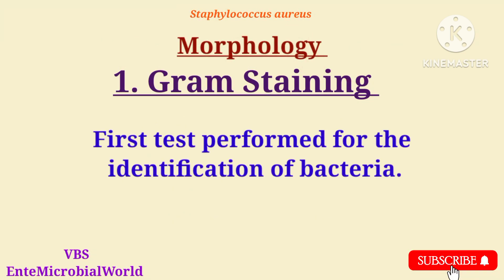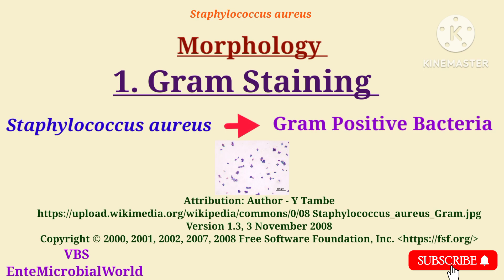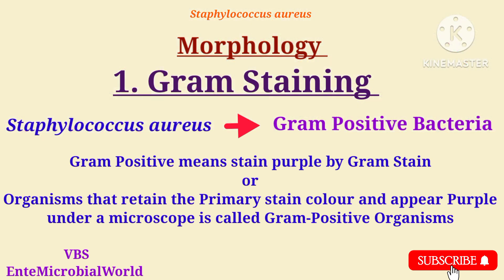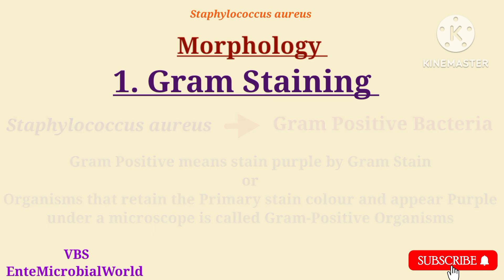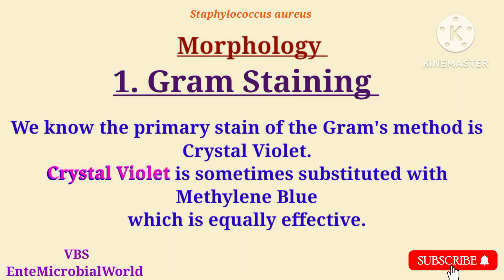Gram staining is the first test performed for the identification of bacteria. Staphylococcus aureus is a Gram-positive bacterium. Gram positive means the organism retains the primary stain and appears purple under a microscope. The primary stain of the Gram method is crystal violet, which is sometimes substituted with methylene blue, which is equally effective.